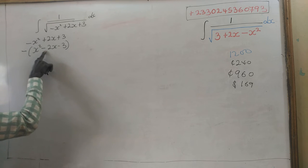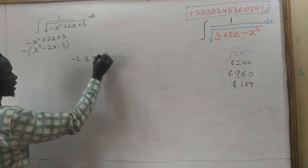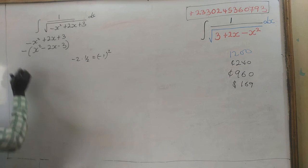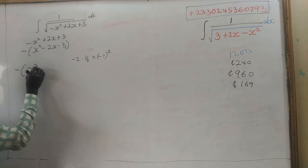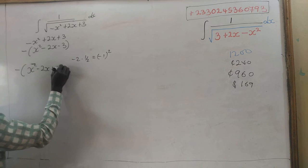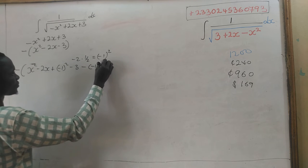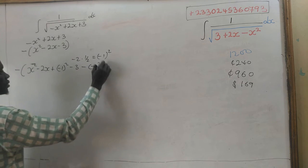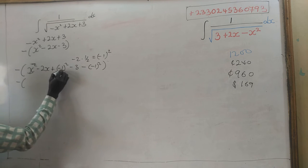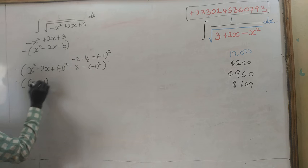Find half of the coefficient of x, that is minus 2, so half gives negative 1. You square this and add it to the expression: negative into bracket x squared minus 2x plus (minus 1) squared minus 3 minus (minus 1) squared. This simplifies to negative into bracket (x minus 1) squared.